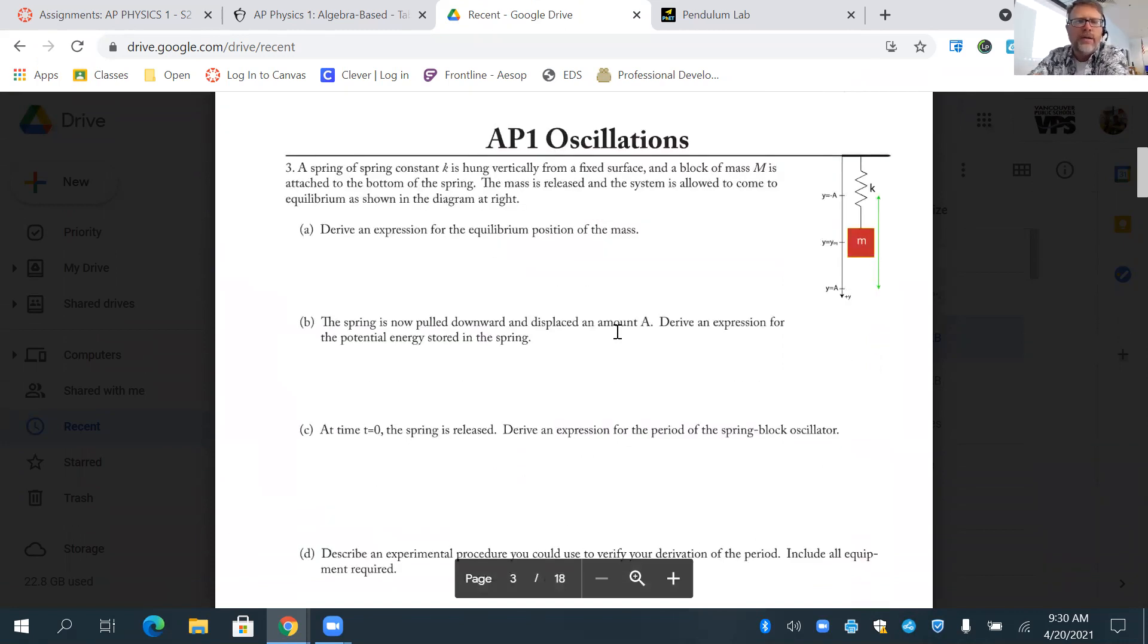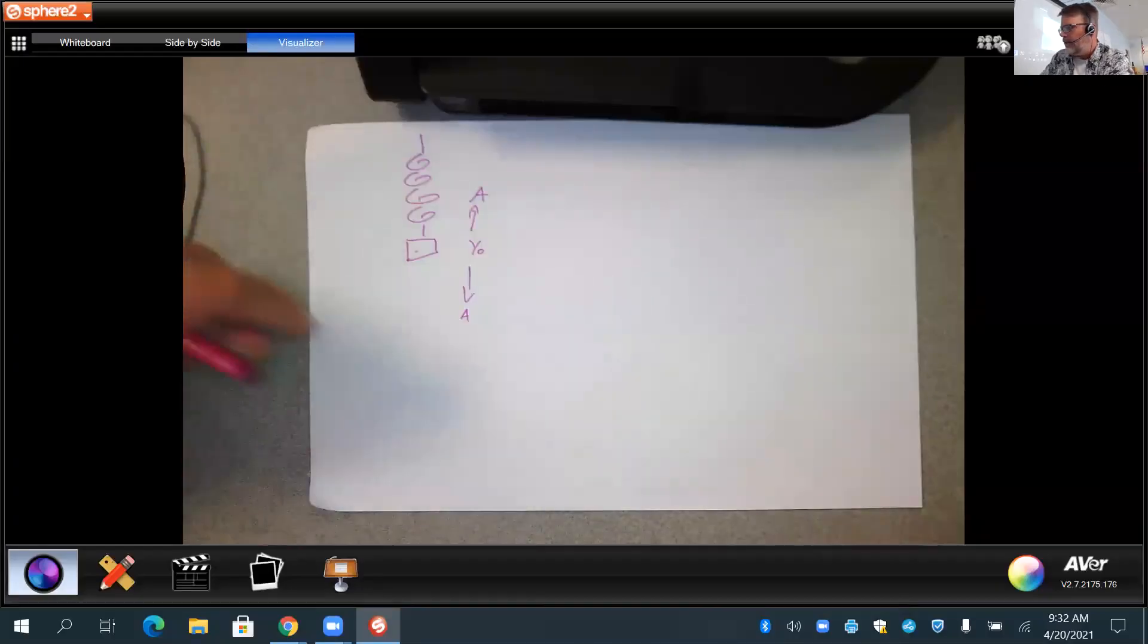All right, number three. A spring with constant K is hung vertically from a surface and the mass M is attached to it. Derive an expression. This is kind of a strong word here for the equilibrium position at the mass. So they kind of tell us that it's going to be Y naught. It's going to be equilibrium, but how can we get that as an expression? So let's do a force diagram to figure that out.